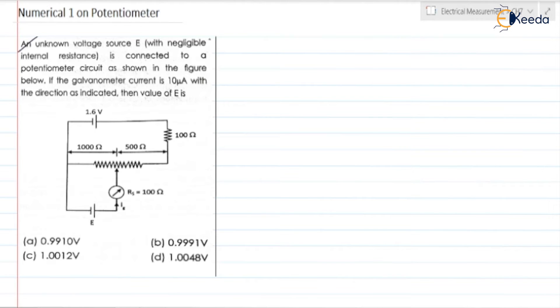So our task is to find the value of E. First thing is, it is given that IG is equal to 10 microampere, so it is 10 into 10 to the power of minus 6 ampere. Our task is to find E.